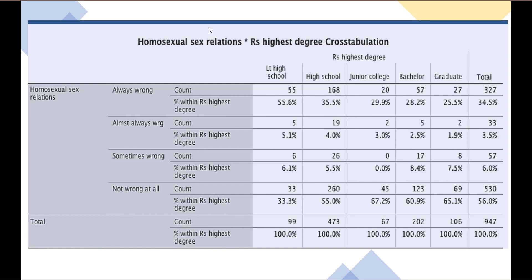Here we have a table — a cross-tabulation of the variables highest degree completed and people's opinions on homosexual sex relations. The column variable is the respondent's highest degree of school completed, and the row variable is the respondent's attitude or opinion on homosexual sex relationships. Each intersection is a cell — for example, less than high school degree and always wrong is a cell, high school and always wrong is a cell, junior college and always wrong is a cell, bachelor and always wrong is a cell.